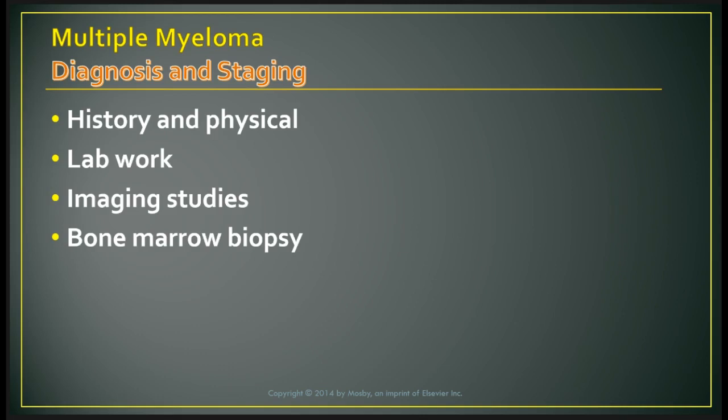Staging of myeloma is based on one of two methods: the first looks at M protein in urine or blood, calcium and hemoglobin levels, number of bone lesions, and renal function; the second is based on serum levels of albumin and beta-2 macroglobulin.